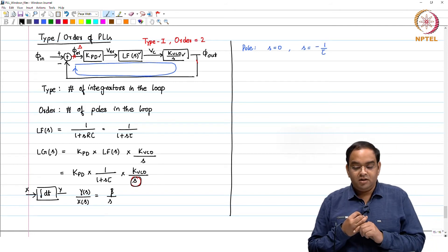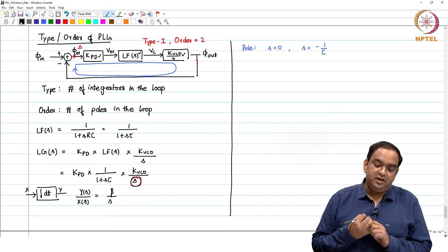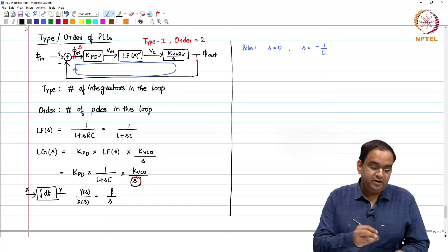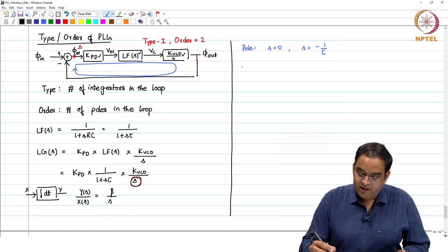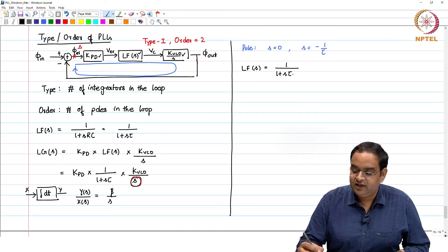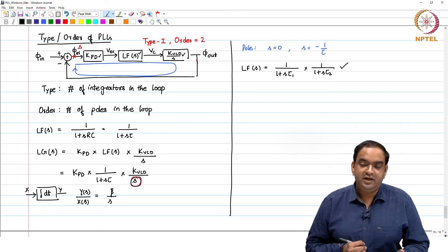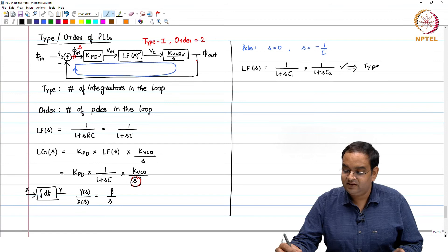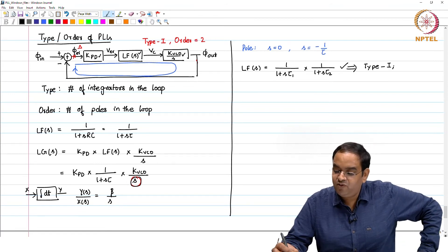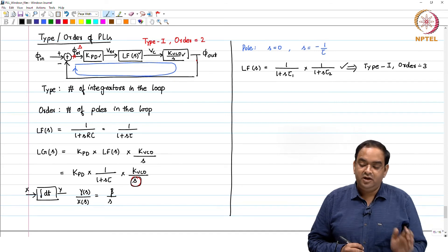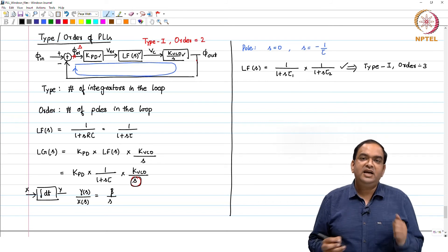It is not always necessary that your PLL, as you increase the order, your type should also increase, not necessarily. For example, I will just take one example. Let us say loop filter of S is equal to, I can have 1 plus S tau 1 into 1 plus S tau 2. If I choose this loop filter and everything else in the PLL remains same, then this is going to give you a PLL. In the previous case, the simple implementation which we have seen is type 1 and order 3 because there are 3 poles. You can increase the order of the PLL without increasing the type of the PLL.